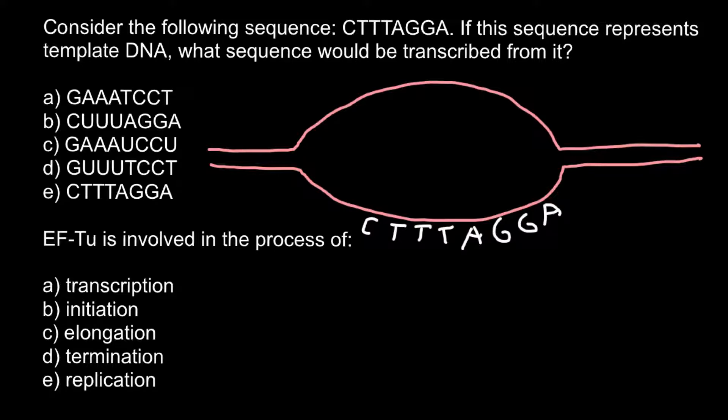If we transcribe the sequence, that means we would make messenger RNA. It is very easy to predict because we just have to follow the rule that in double-stranded DNA, adenine would always pair with thymine and guanine would pair with cytosine. But because here we have messenger RNA, thymine is substituted with uracil.